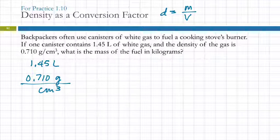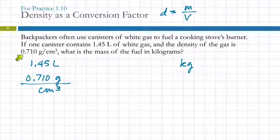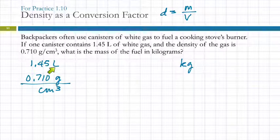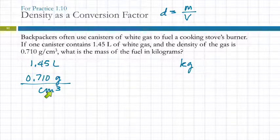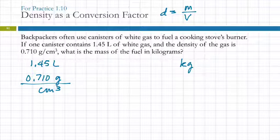Where do we end up? The question asks: what is the mass in kilograms? So we're trying to get to kilograms. We're probably going to need to use both of these numbers. Looking at the units — liters is just a volume, and grams per cubic centimeter has 'per' in it, so anything that's a fraction with 'per' could be a conversion factor. So we're going to start with the liters and use the density as a conversion factor.